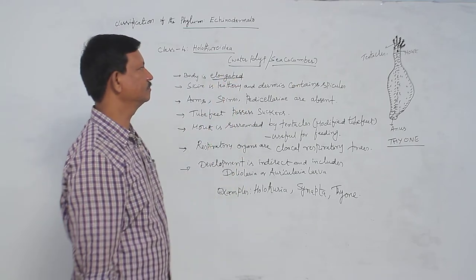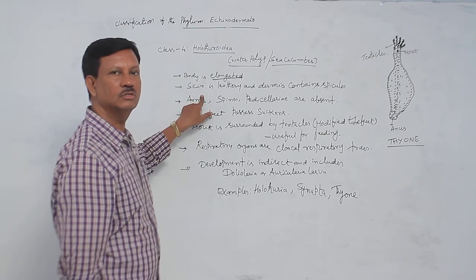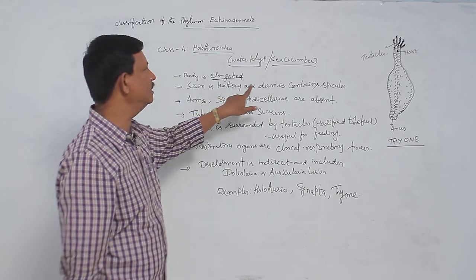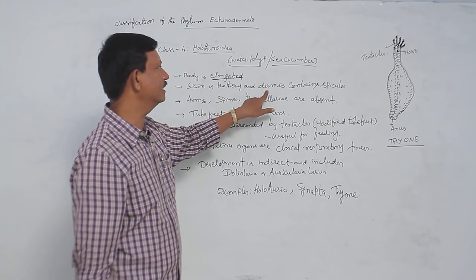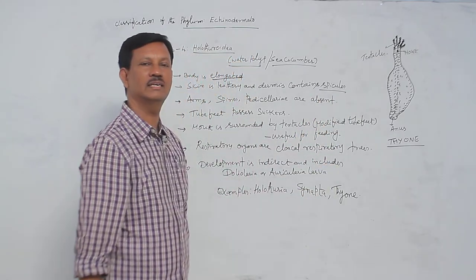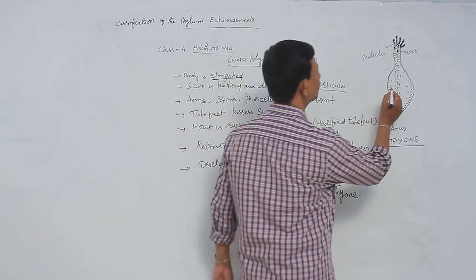The body is externally covered by skin. It is smooth, flexible, and leathery. The dermis, the inner layer, contains spicules. No spines are present, but spicules are present on the body. You can see these are the spicules.